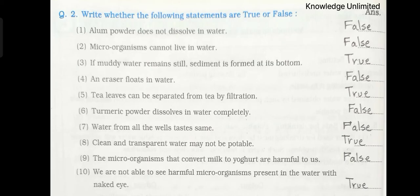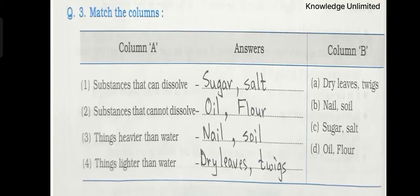Let's see the next question. Question number three: Match the column. First one: Substances that can dissolve. Answer: Sugar, Salt. Second one: Substances that cannot dissolve. Answer: Oil, Flour. Third one: Things heavier than water. Answer: Nail, Soil. Fourth one: Things lighter than water. Answer: Dry leaves, Twigs.